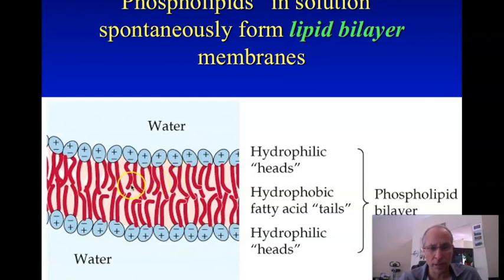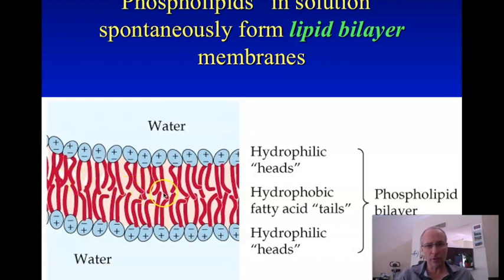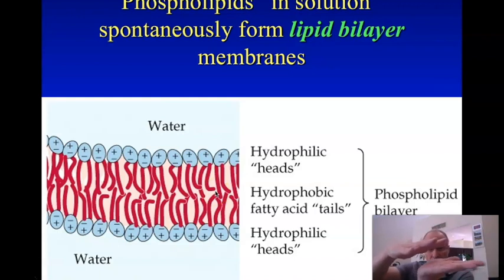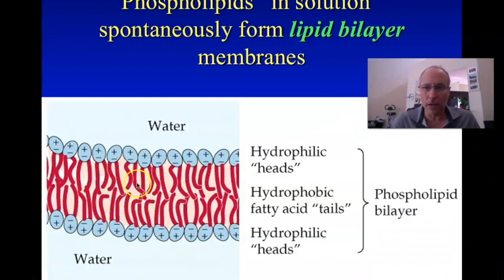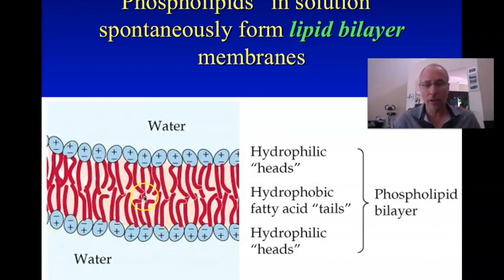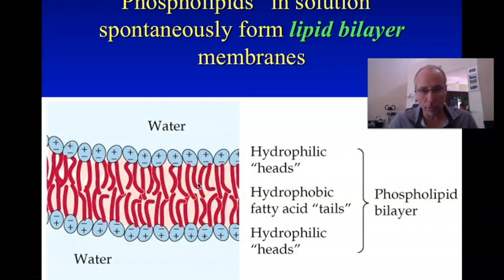So this becomes what we call a phospholipid bilayer — phospholipid because the molecules are phospholipids, and bilayer because there are two different layers. There's no strong connection between the two layers, which means the membrane has two layers that slide relative to each other. That makes this a fluid. Things inside here will actually move around because of that. We have a number of drugs — barbiturates and others — that operate by changing the property of this membrane, making it either more rigid or allowing it to shear more easily.